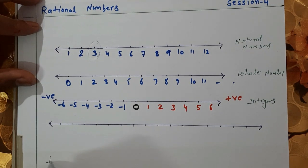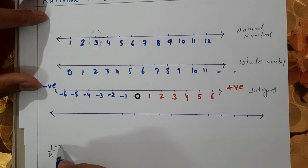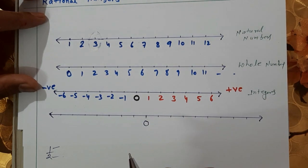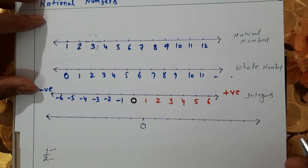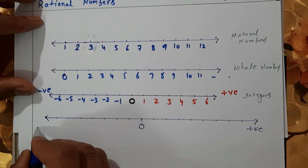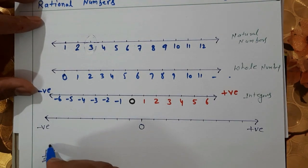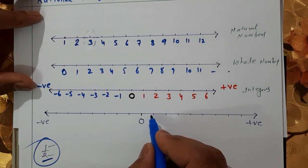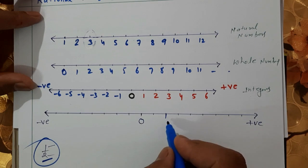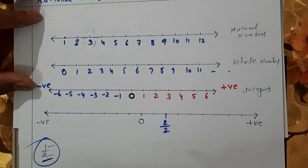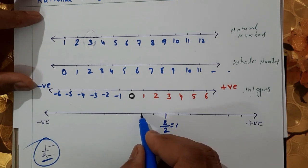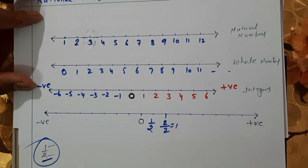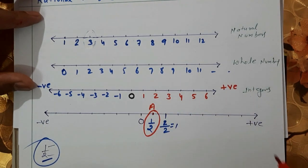For example, we are going to represent 1/2. Here, the numerator is 1 and the denominator is 2. Since 1/2 is a positive rational number, it will be on the right side of 0. The denominator is 2, so we divide the unit into 2 equal parts. After 0, the first division is 1/2. Therefore, this point is 1/2. We can label it point A, point B, or any name.